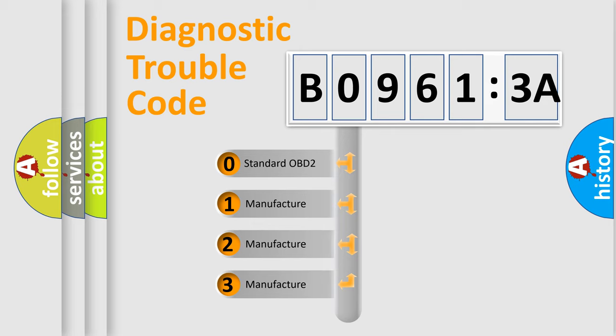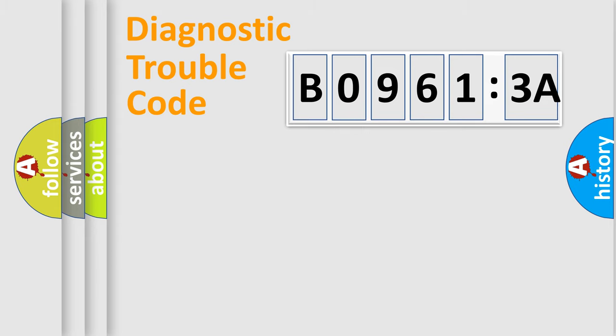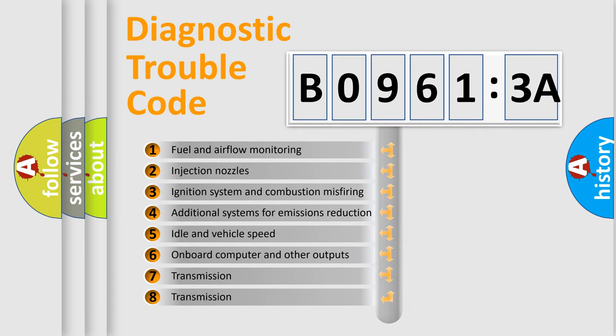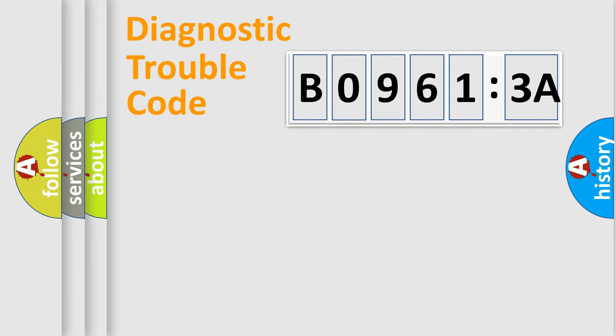If the second character is expressed as zero, it is a standardized error. In the case of numbers 1, 2, or 3, it is a more prestigious expression of the car-specific error. The third character specifies a subset of errors. The distribution shown is valid only for the standardized DTC code. Only the last two characters define the specific fault of the group.